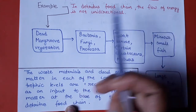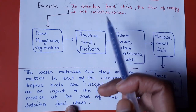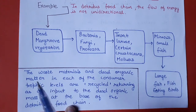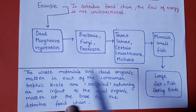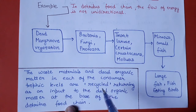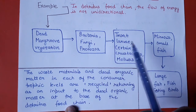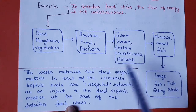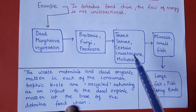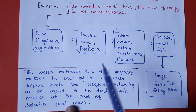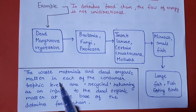In detritus food chain the flow of energy is not unidirectional. Yahaan par jo energy ka flow hai woh unidirectional nahin hai, ek direction mein nahin ja raha, kyunki the waste materials and dead organic matter in each of the consumer trophic levels are recycled. Har step par kisi bhi organism ki agar death hoti hai toh uska jo decaying organic matter hai woh bhi detritus food chain ke liye base ka kaam karega. Isliye yahaan unidirectional flow nahin hota — yahaan recycling hoti hai nutrients ki.